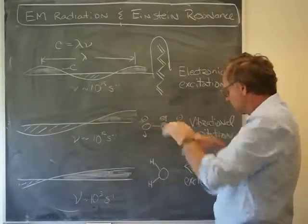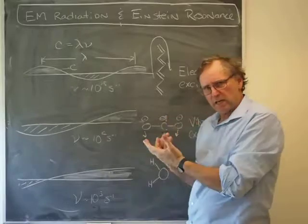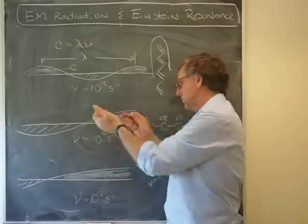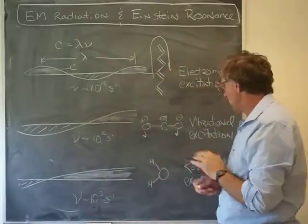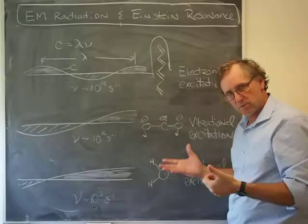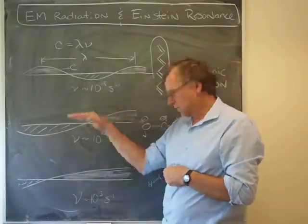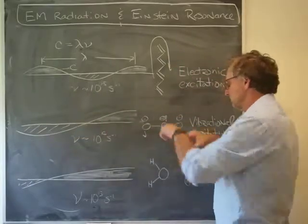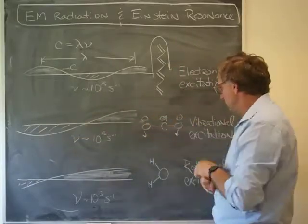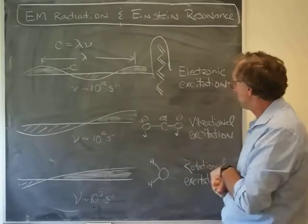But you're only going to really get a sustained delivery of energy from the light to the molecule if there's Einstein resonance—that is to say, the same kind of frequency of light that's driving it matches the natural frequency at which molecules like to vibrate, in this case bend.